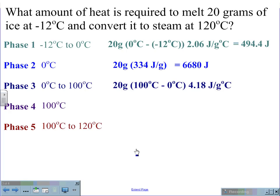In the third phase, 20 grams times the quantity of 100 minus 0 times the specific heat of 4.18 joules per grams degrees Celsius gives us 8,360 joules.